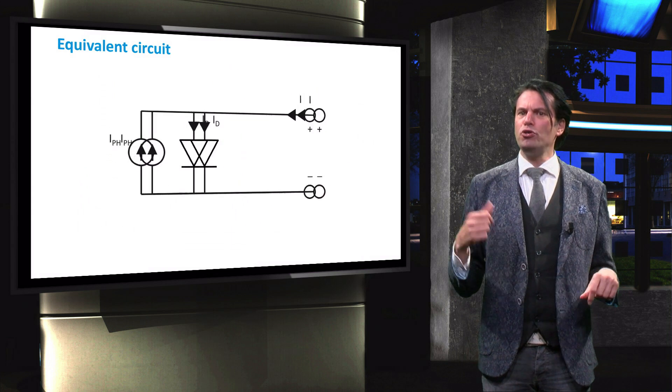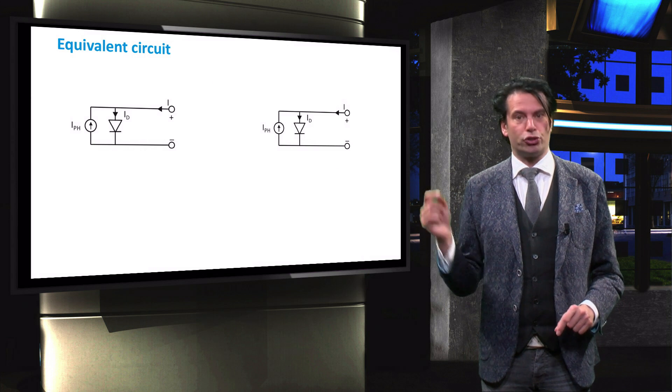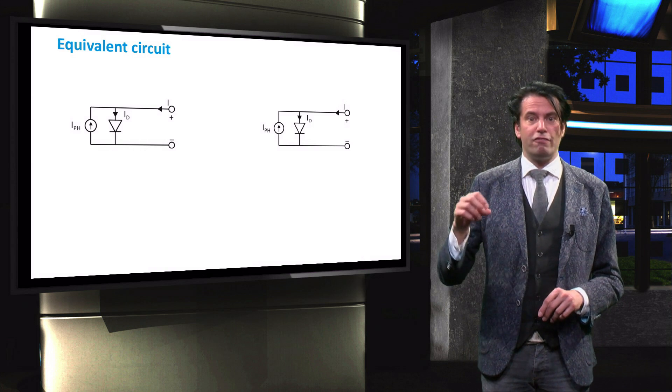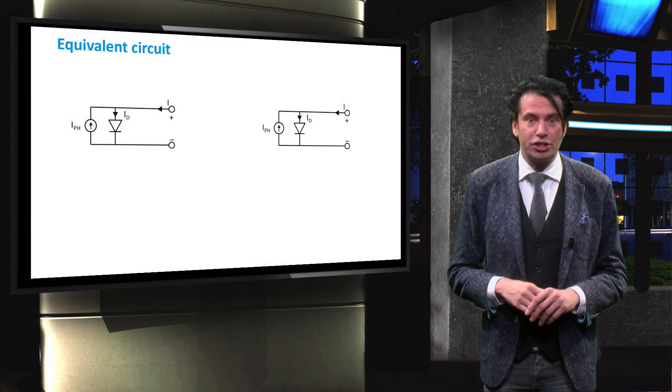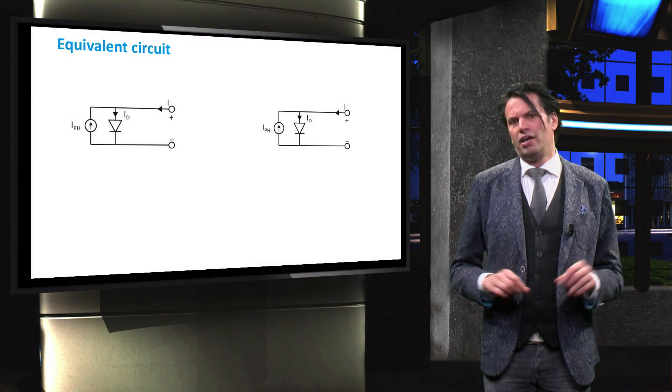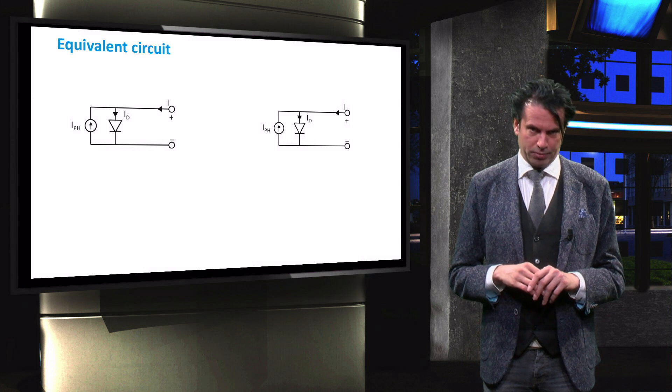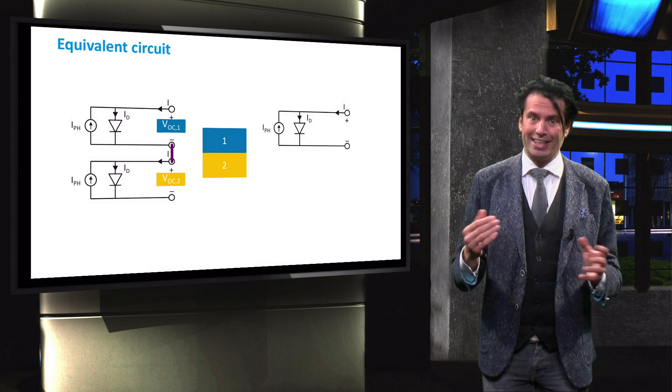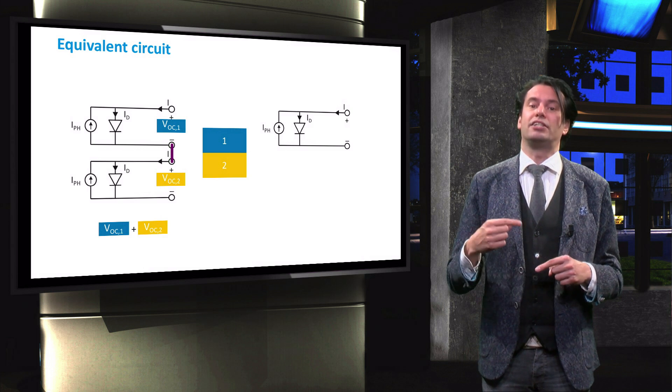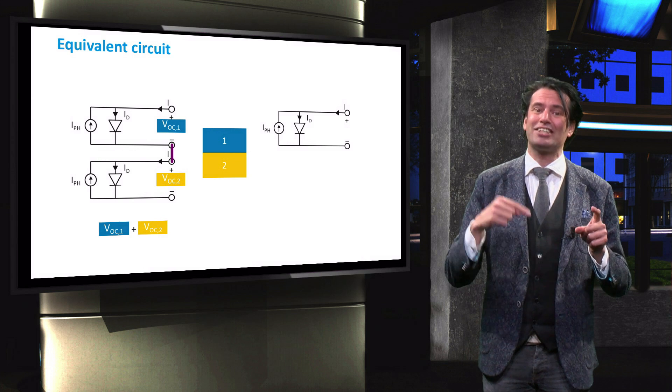We have used this equivalent circuit diagram before to explain the interconnection in a multi-junction device. I-photon represents the photo-generated current and ID symbolizes the dark current. Every junction can be represented by this equivalent circuit. As we have seen earlier, the monolithic tandem cells are connected in series, therefore the voltages of the individual cells add up.